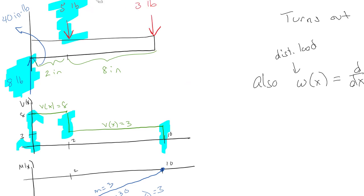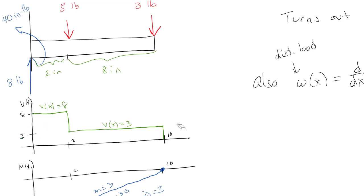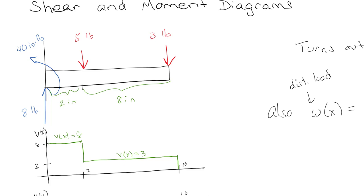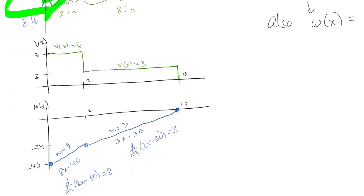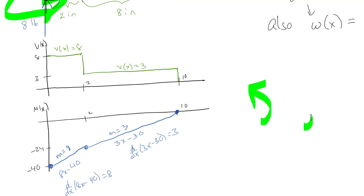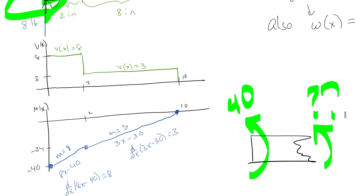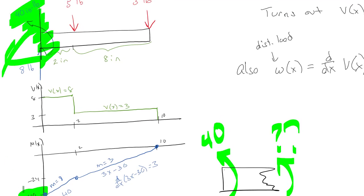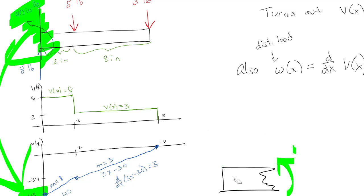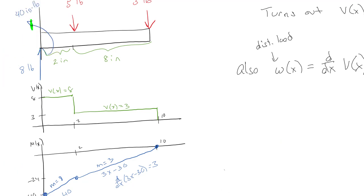We can get our initial conditions for the moment diagram from the beam diagram as well. We've got this initial 40 inch-pounds and by our sign convention the unknown reaction moment is in the same direction as our drawn positive moment, so the unknown is negative. Whenever you have an initial bending moment on your beam, that corresponds to the opposite sign as an initial value on your moment diagram. The whole goal is to just look at the loads and come up with shear and moment diagrams without doing all the math.